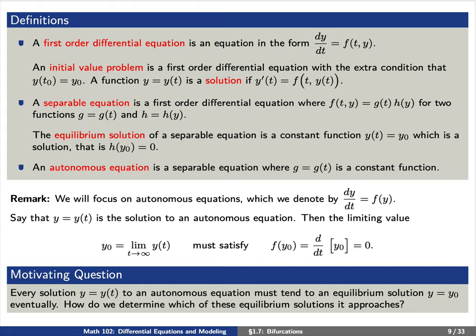Say that y(t) is the solution to an autonomous equation. Then the limiting value y₀ — that is, the limit as t increases without bound of y(t) — must satisfy f(y₀) = 0. This means that every solution y(t) to an autonomous equation must tend to an equilibrium solution y = y₀. But how do we determine which of these equilibrium solutions it approaches?